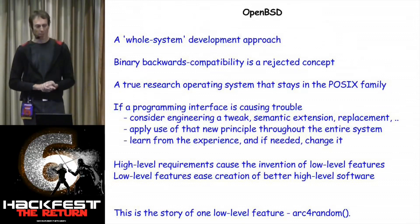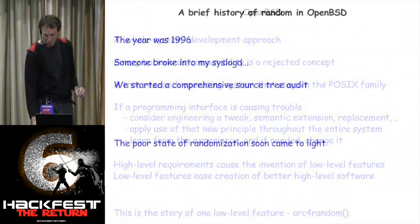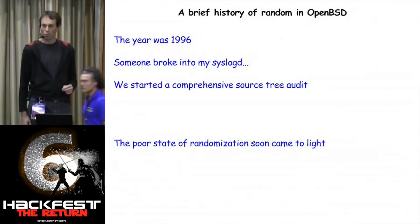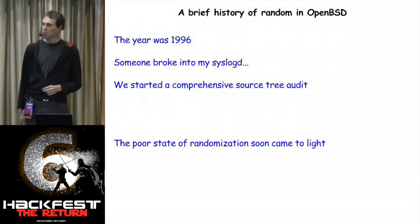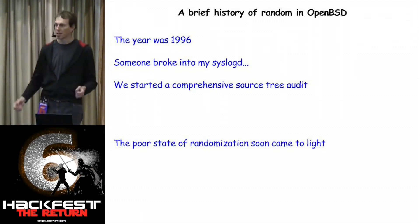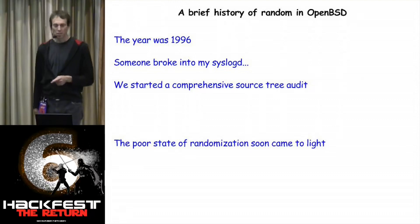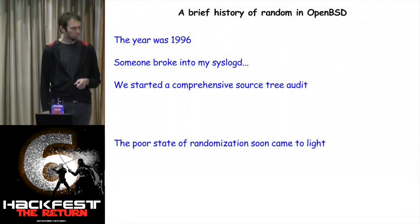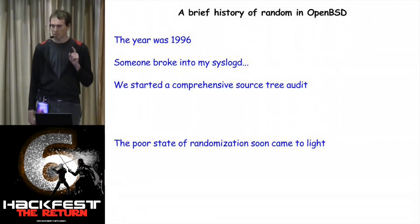I'm going to talk about one specific small feature called arc4random, which has a story like this. It was around 1996 when someone broke into OpenBSD's development infrastructure with a bug in syslogd. Before this, OpenBSD was just a place to work on support for PCs and SPARCs — security wasn't really a thing we were into. But suddenly we were interested, so we should probably thank whoever that person was. This started the comprehensive source code audit of everything in OpenBSD.